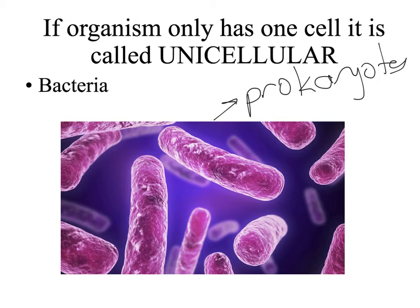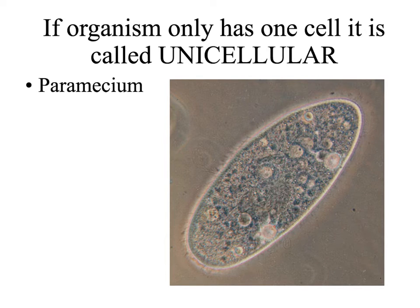The second unicellular organism is paramecium. Paramecium is a protist — it is one of the members of the Protista kingdom.